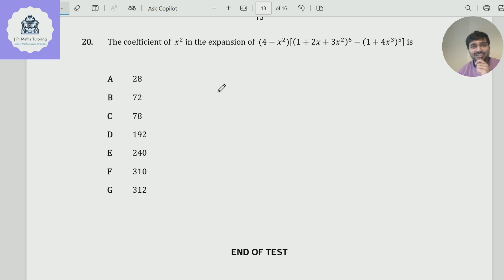Of course, what we don't want to do is just sit here and expand all of this. That will take far too long. As you notice, I've got 4 - x² and then I'm multiplying it by this big function here, which I'll just call g(x) for the time being.